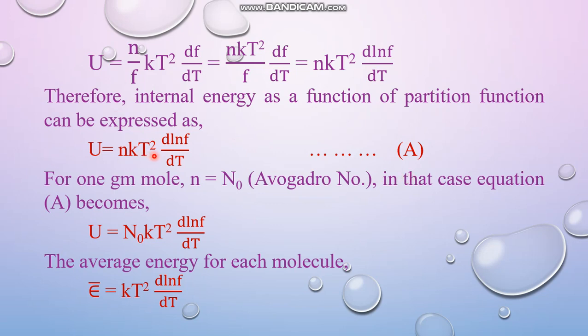So the expression is NkT squared d ln F by dT. Now if it is a one gram mole of gas or in the system there is one gram mole of particles then N is nothing but the Avogadro number. In that case this small letter N can be replaced by N_0 which is representing the Avogadro number.